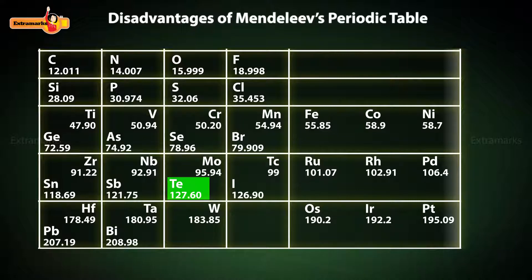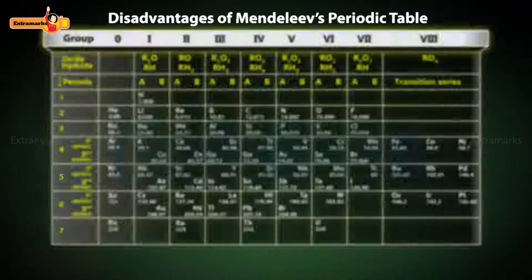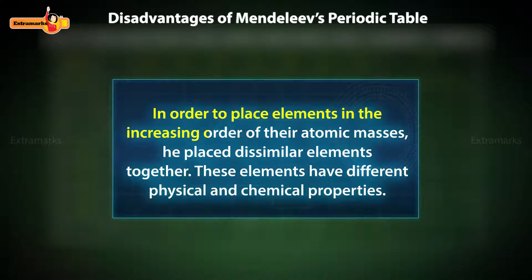Tellurium having atomic mass 127.6 precedes iodine having atomic mass 126.9. In order to place elements in the increasing order of their atomic masses, he placed dissimilar elements together. These elements have different physical and chemical properties.